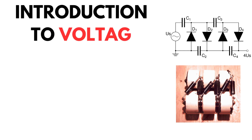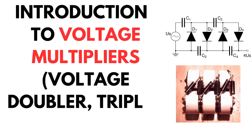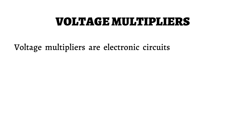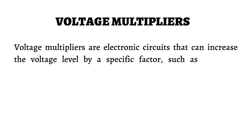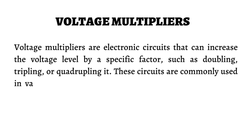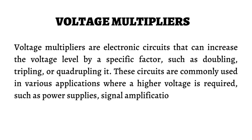In this video, we learn about different types of voltage multipliers along with their circuit diagrams and real-life applications. Voltage multipliers are electronic circuits that can increase the voltage level by a specific factor, such as doubling, tripling, or quadrupling it. These circuits are commonly used in various applications where a higher voltage is required, such as power supplies, signal amplification, and high-voltage generation.